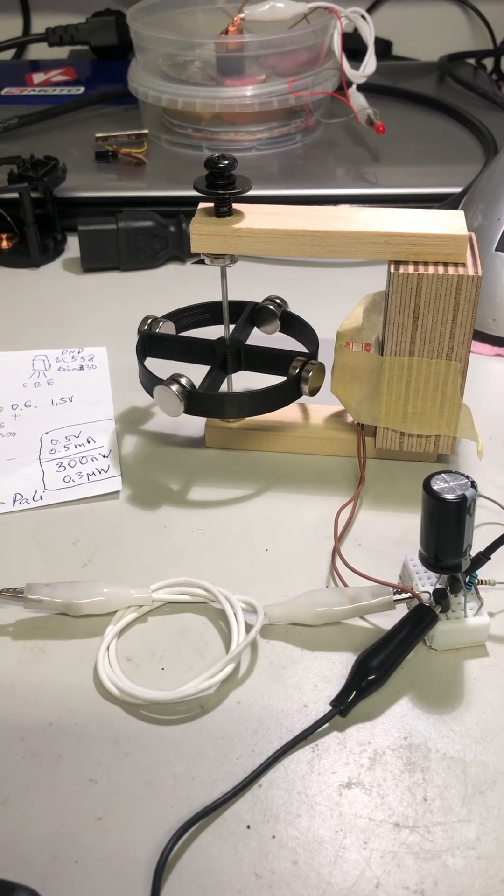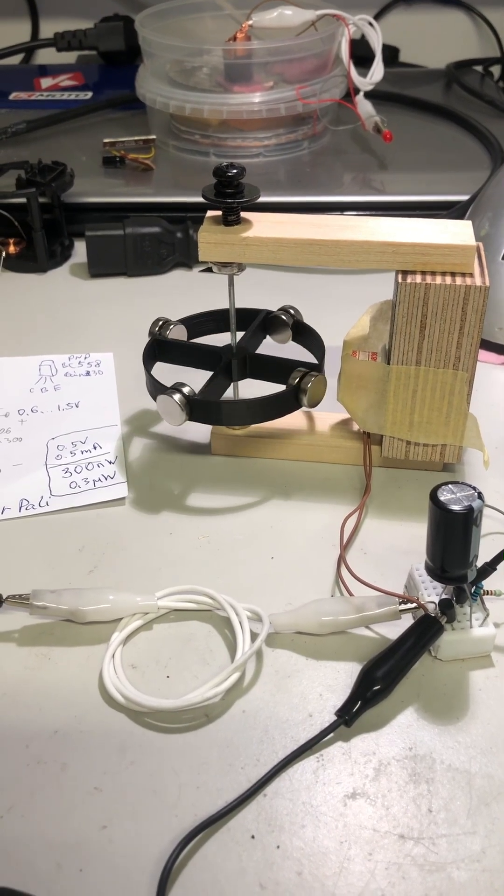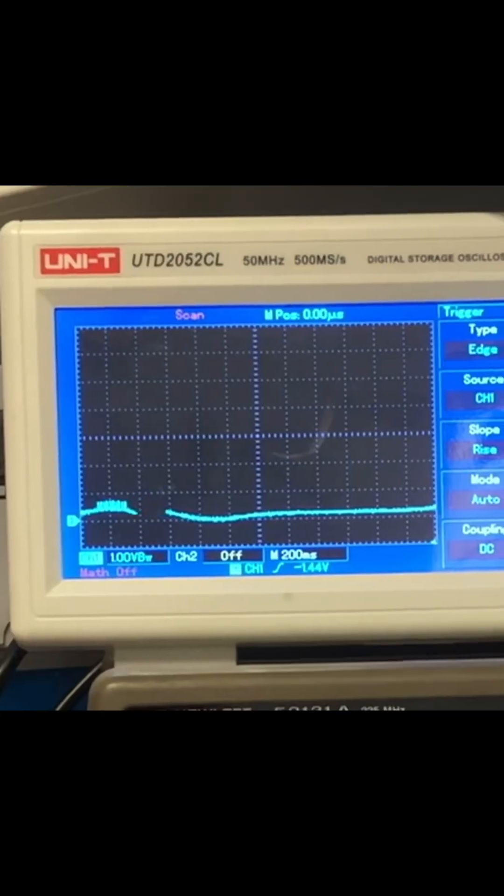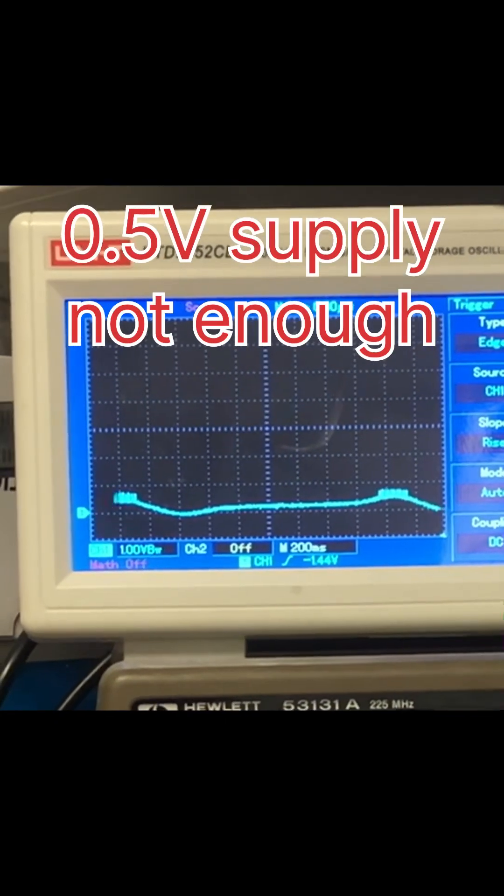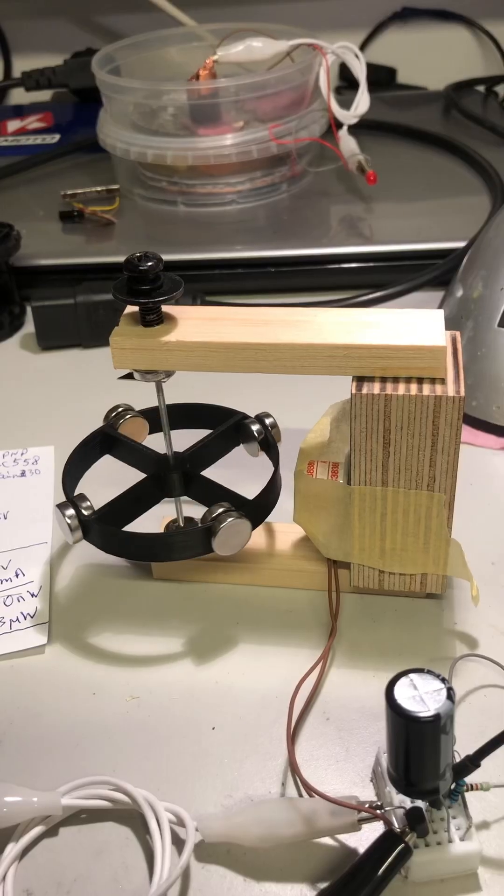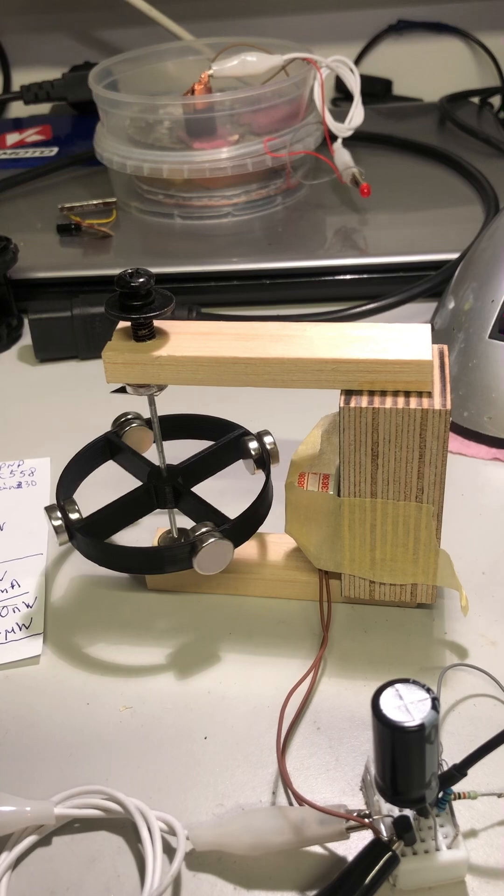This is test to see if we can get sub micro watt motor. Now it is 300 nanowatts. We have induction pulses and on top the transistor is open. The push by the coil is really visible.